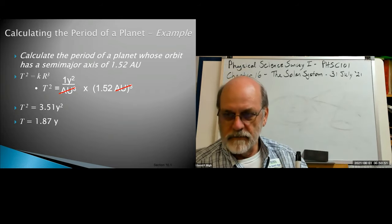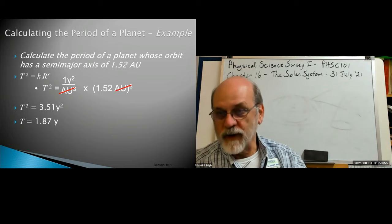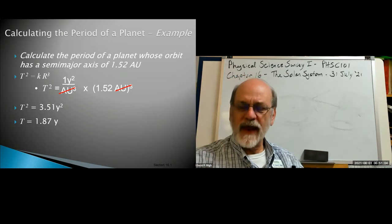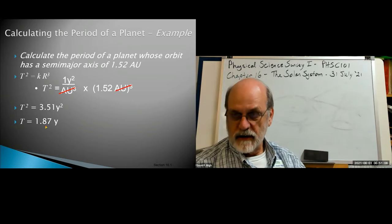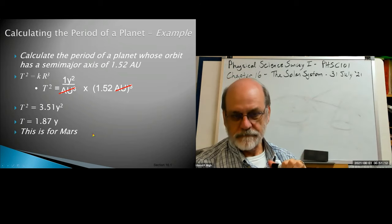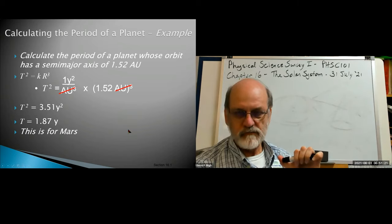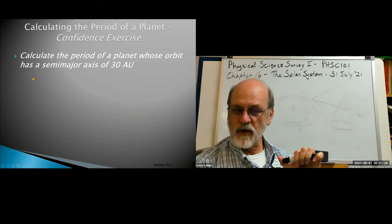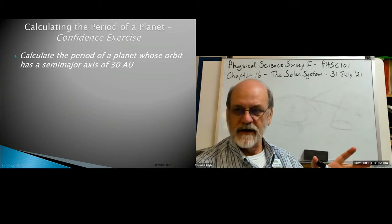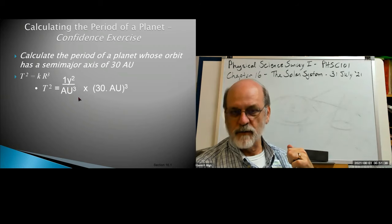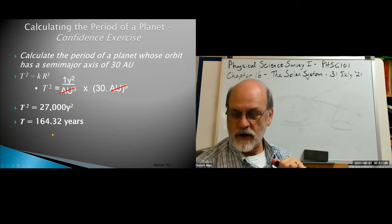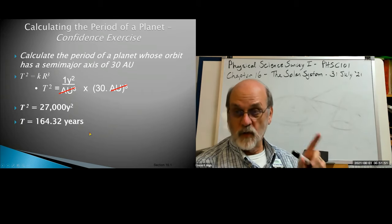The 1.52 AU example is actually Mars — Mars orbits at 1.52 astronomical units with a period of about 1.87 years. For a planet orbiting at 30 astronomical units — 30 times as far from the sun as Earth — the calculation gives approximately 164 years to orbit the sun. That's way out near Pluto's region.